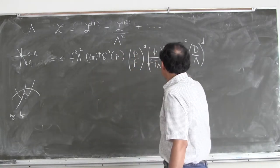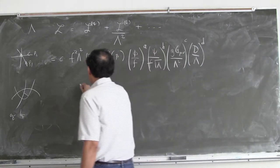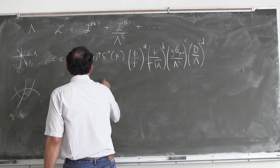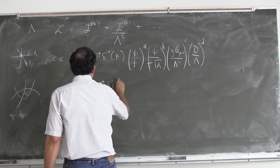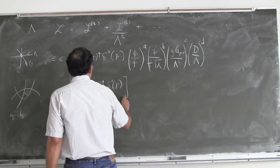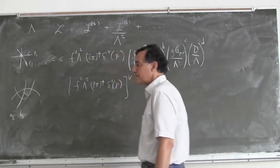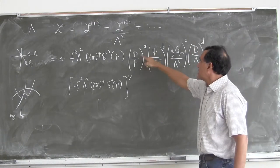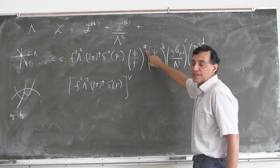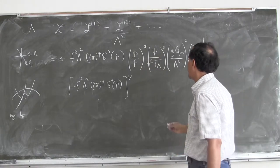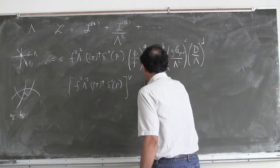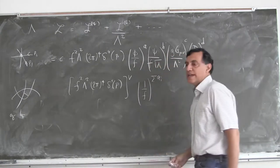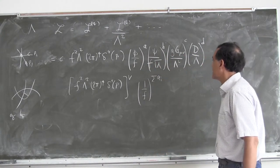Taking a bunch of vertices together, I get f-squared lambda-squared times (2π)⁴ delta⁴(p), one factor for each vertex. For every vertex I get a factor of 1/f to the number of scalar lines, so I get 1/f to the sum of the a_i's, where the a_i's are the individual vertices.